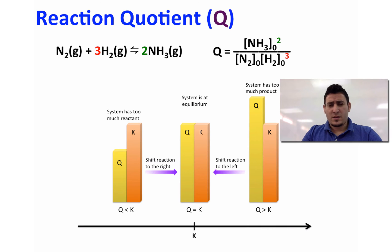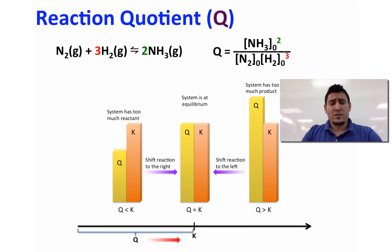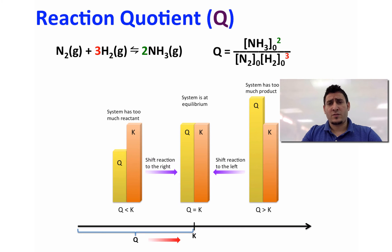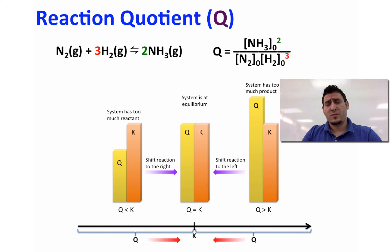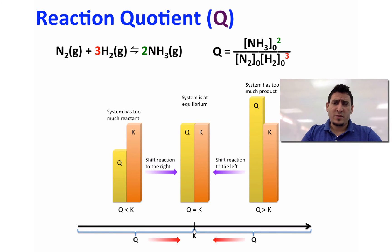We can also think of it this way: place K on an axis and find where Q is. If Q is less than K, Q has to move to the right to equal K, so the system shifts right. If Q is greater than K, Q has to shift to the left to equal K, meaning the system shifts to the left.